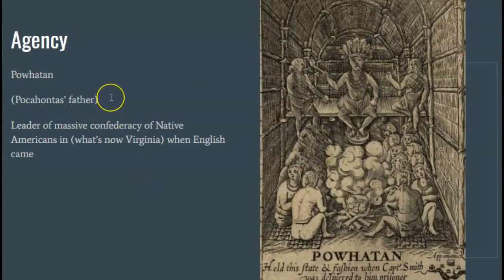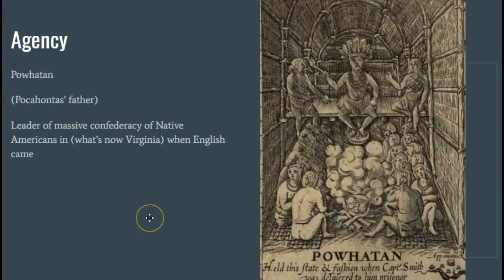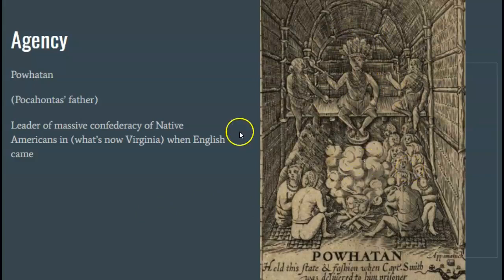This is Pocahontas' father. During his lifetime he was not famous for being Pocahontas' father — Pocahontas was kind of famous for being his daughter. And he definitely thought he had the power in the relationship between himself and the English in the early 1600s in Virginia, and he did really have a lot of the power. He was the leader of an incredibly powerful confederacy of Native Americans, and what he thought he was doing was bringing the English into his confederacy.